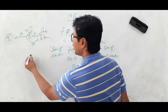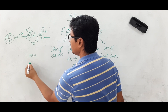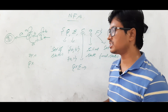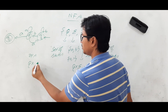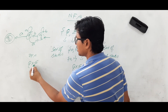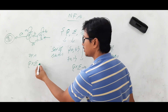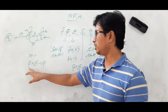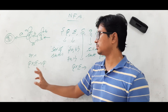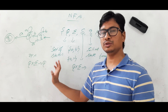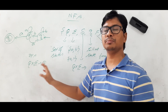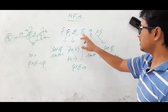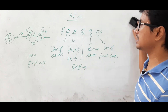For a DFA, the transition function means: from any state in Q, on taking any alphabet, you will go to exactly one state. So q₁ on 'a' goes to some state, q₂ on 'b' goes to some state. We will now discuss what happens in an NFA with an example.